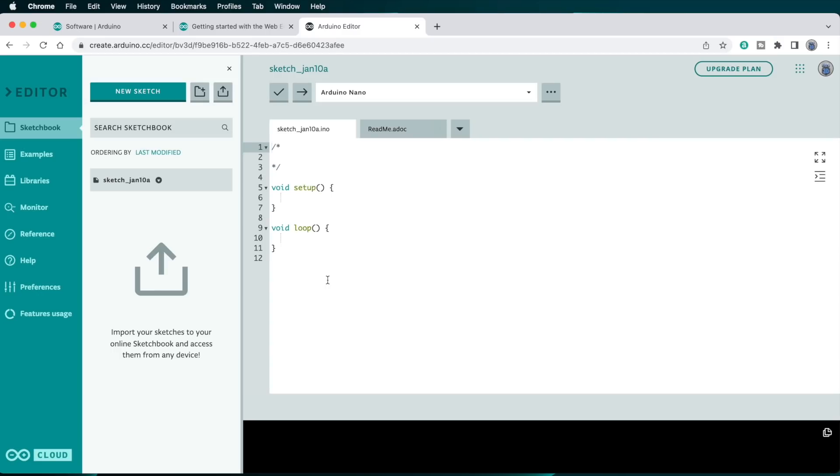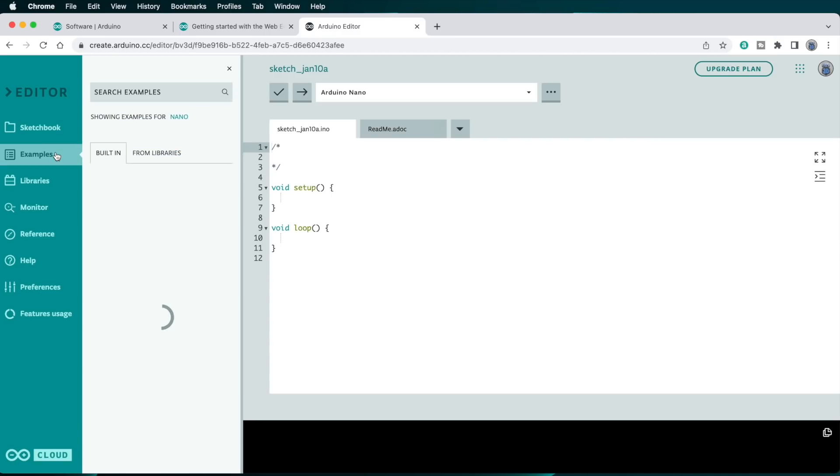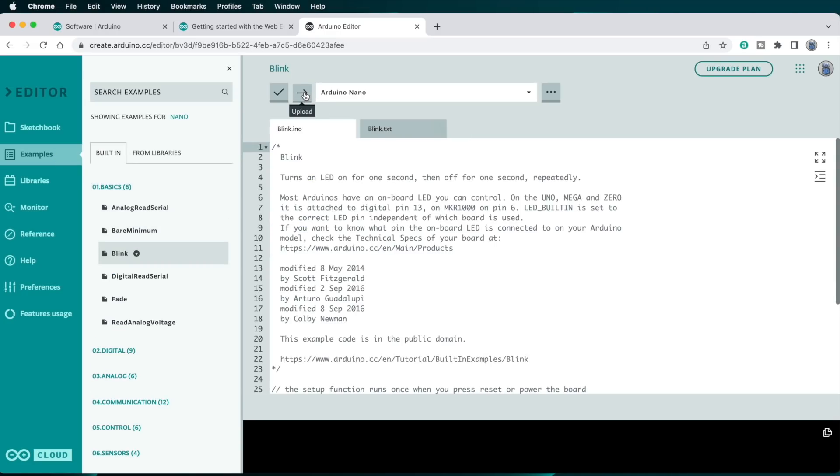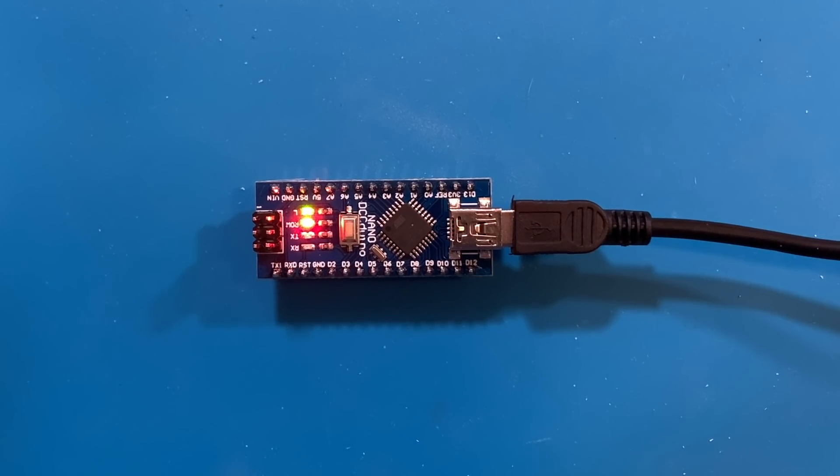Click examples in the left sidebar to see what's available. In the basics category, there's one called Blink. Click that to load it, and then click the Upload button. If all goes well, the green LED on the Nano board should blink on and off once per second.